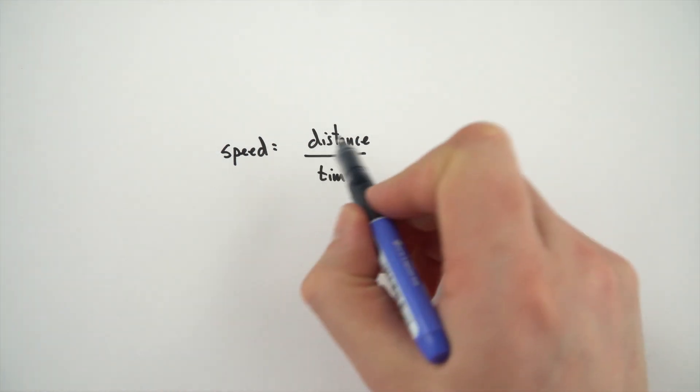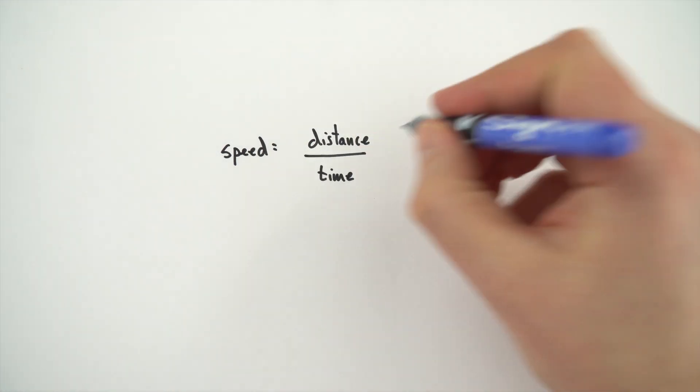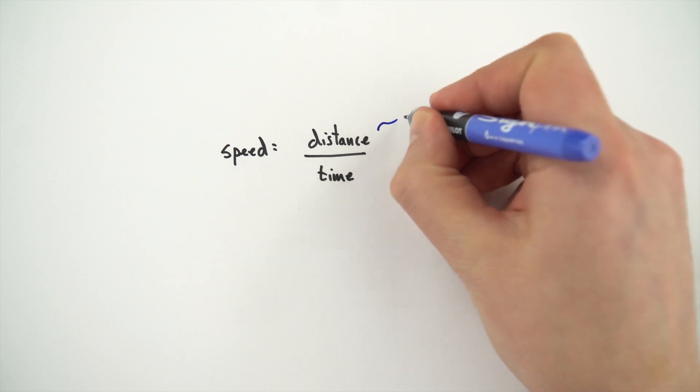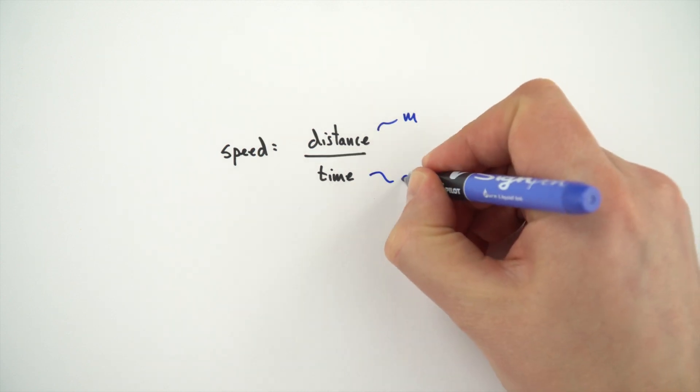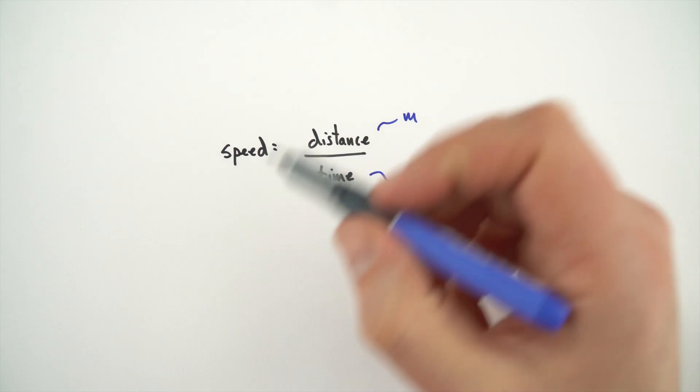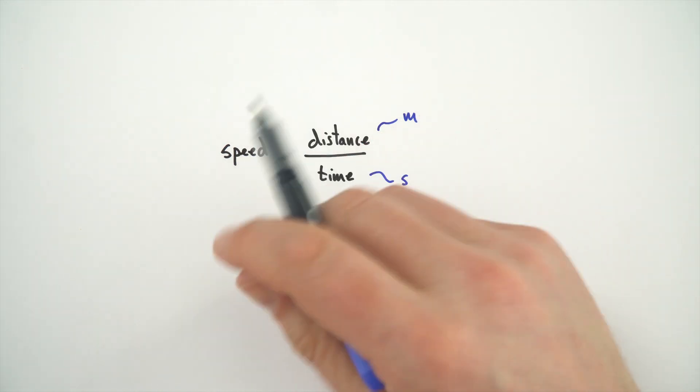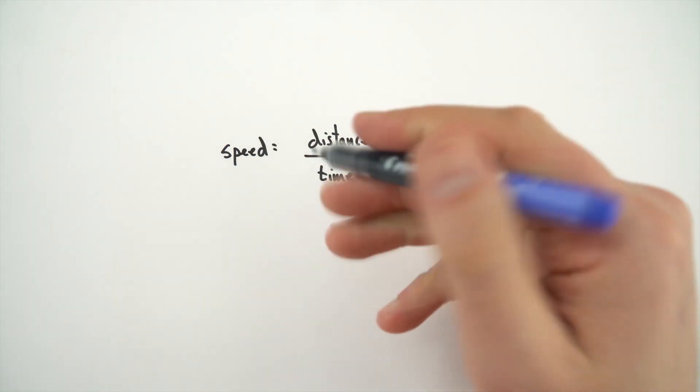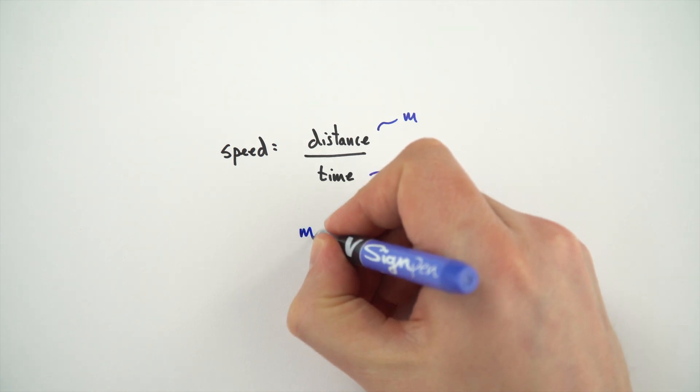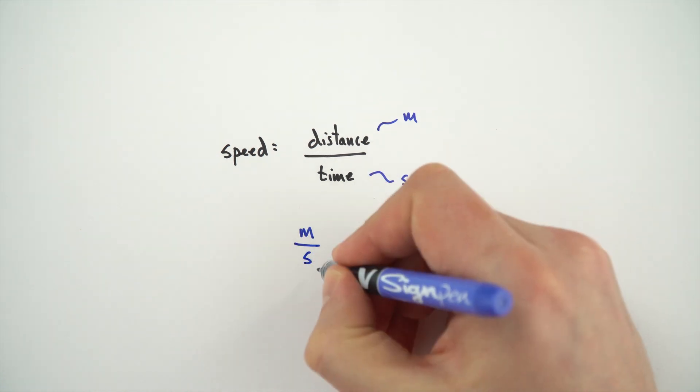So we have the equation speed is equal to distance over time. Now in terms of the units we measure distance in meters and time in seconds. And when it comes to looking at the unit for speed what we then have is a derived unit. It's derived from a couple of base units. And what we're looking at then is the amount of meters that go per second.